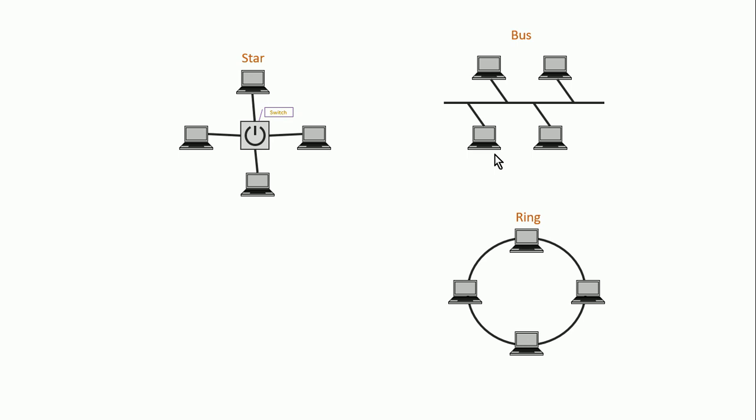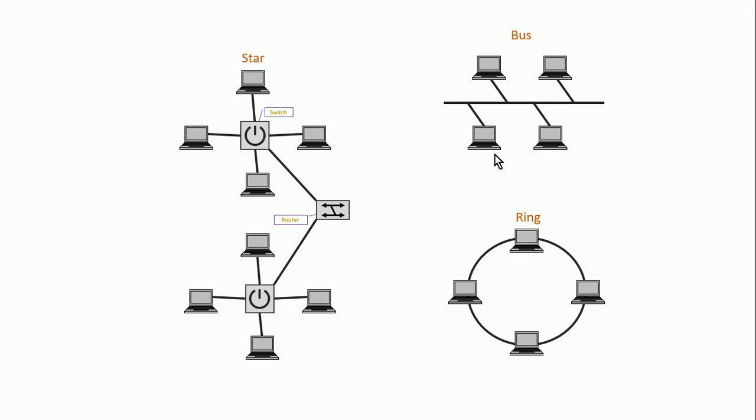A switch connects all the devices on our local network. But if you want to connect to other networks — like Netflix, Amazon, or your school's website — your switch connects to a router. A router is a special type of computer designed just to interconnect different networks. A switch interconnects computers within the same network; a router interconnects all these different networks. So: your computer connects to a switch, switches connect to routers, and routers connect you to the world.